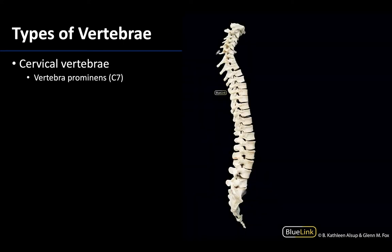The other special vertebra is C7. Counting one, two, three, four, five, six — this makes this one C7. What is unique about C7 is that it has a very long, posteriorly and inferiorly projecting spinous process that can be palpated and sometimes seen through the skin, particularly if you flex the vertebrae. It typically is the longest projecting spinous process, although oftentimes T1 is very close, which looks to be the case in this particular donor. So C7 has this very distinct spinous process and this helps in terms of counting vertebrae as well.